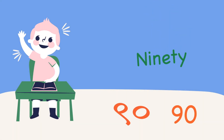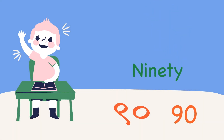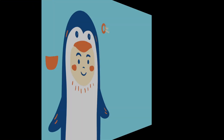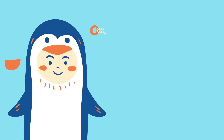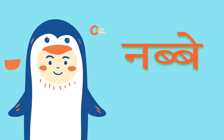Here's the next big number: ninety. Ninety in Hindi is 'nabbe'. That's a nine and a zero — nau aur shunya — nabbe.